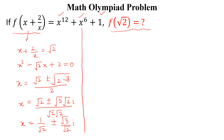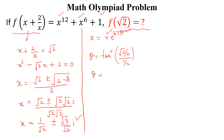This is a complex number and we can write it in the form x = r·e^(±iθ). We need to calculate r and θ. So θ = tan⁻¹(√3/2 ÷ 1/2), which gives θ = π/3.